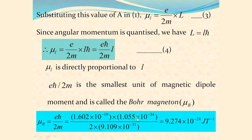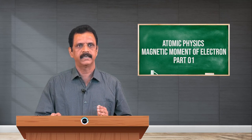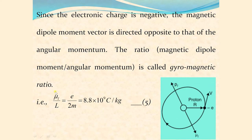Bohr magneton is a very important unit of electron magnetic moment. The atomic magnetic moments are also expressed in terms of Bohr magneton. Since the electronic charge is negative, the magnetic dipole moment vector is directed opposite to that of the angular momentum. So the direction of orbital magnetic moment mu_L is opposite to the direction of angular momentum due to orbital motion. The ratio mu_L / L equals E/2m, which is a constant called the gyromagnetic ratio.